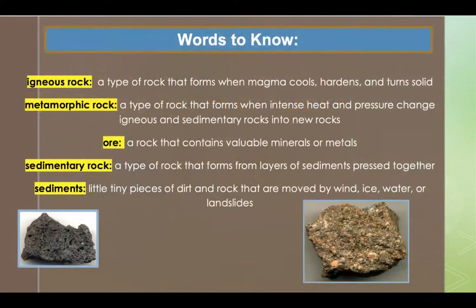As always, here are some words we're going to listen for as we read our story. The first word is igneous rock. Igneous rock is a type of rock that forms when magma cools, hardens, and turns solid. An example: obsidian and granite are two types of igneous rocks.